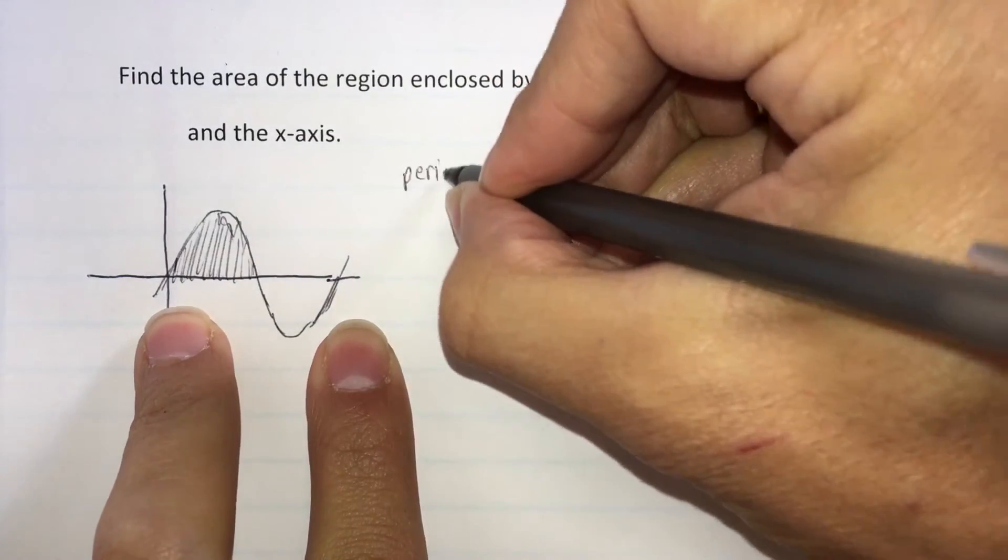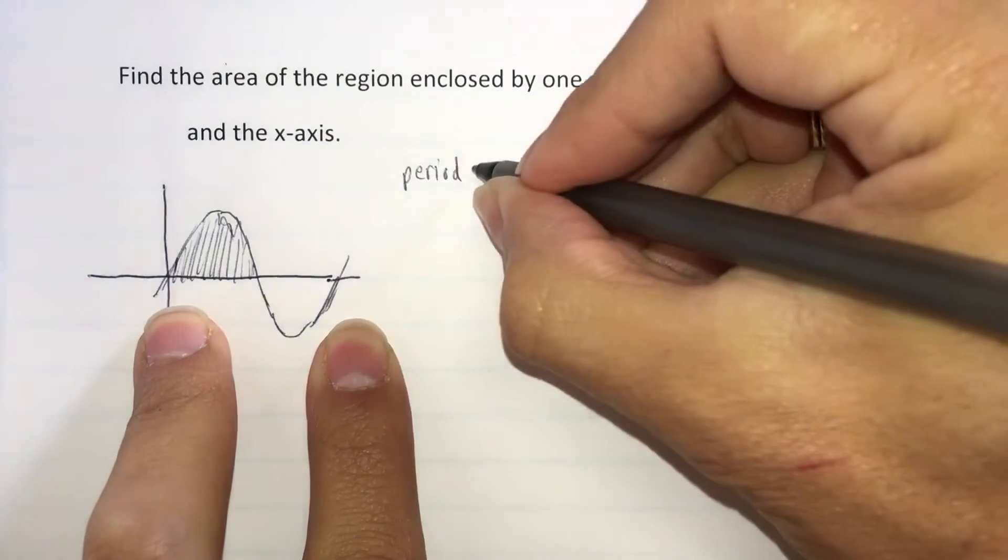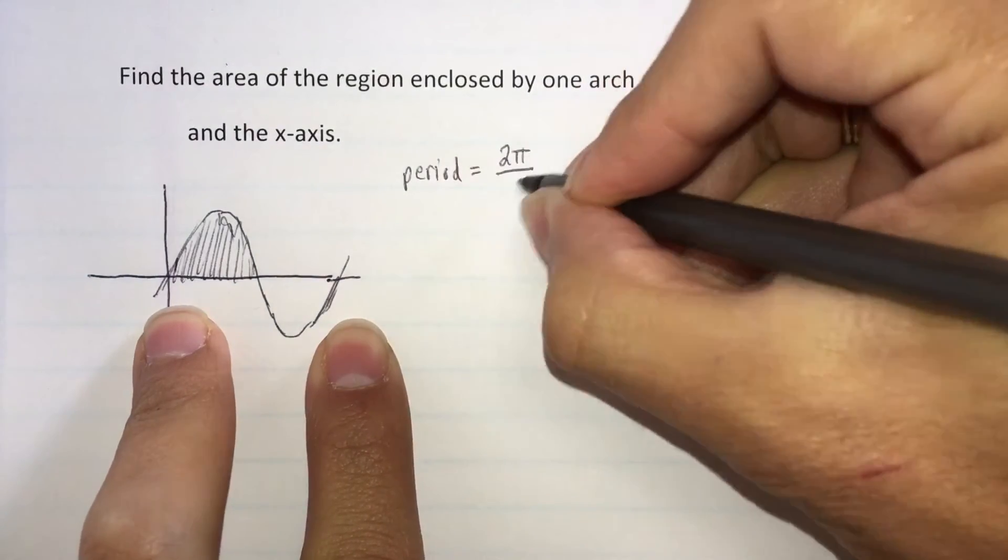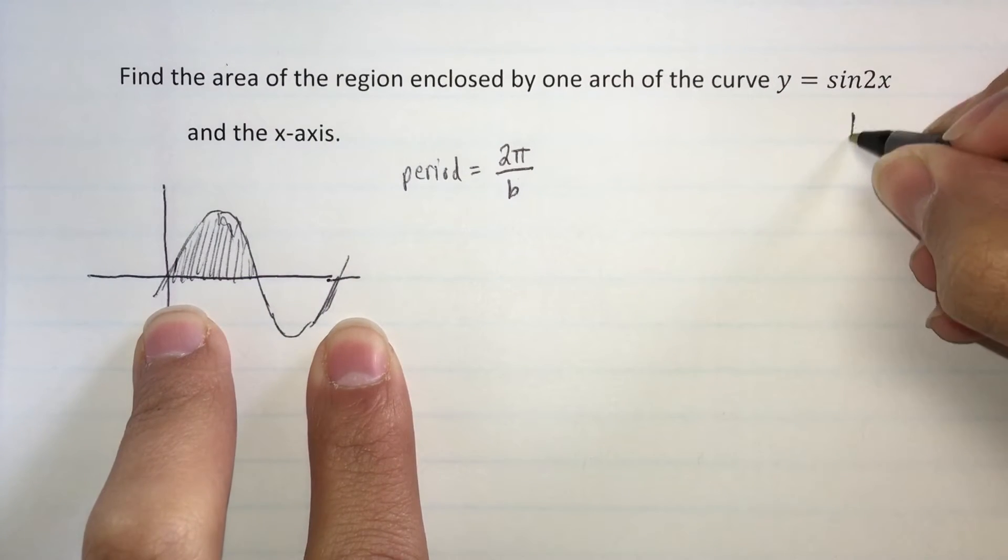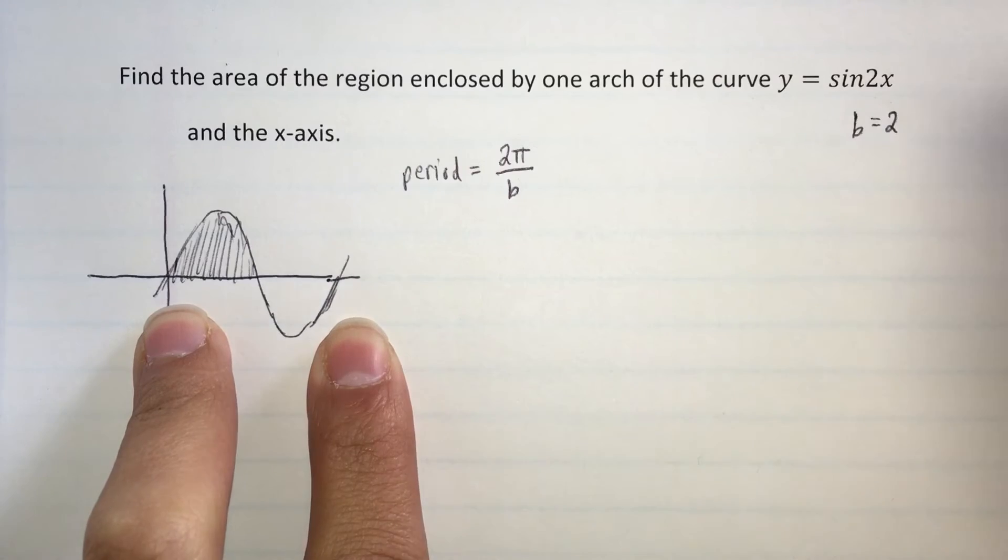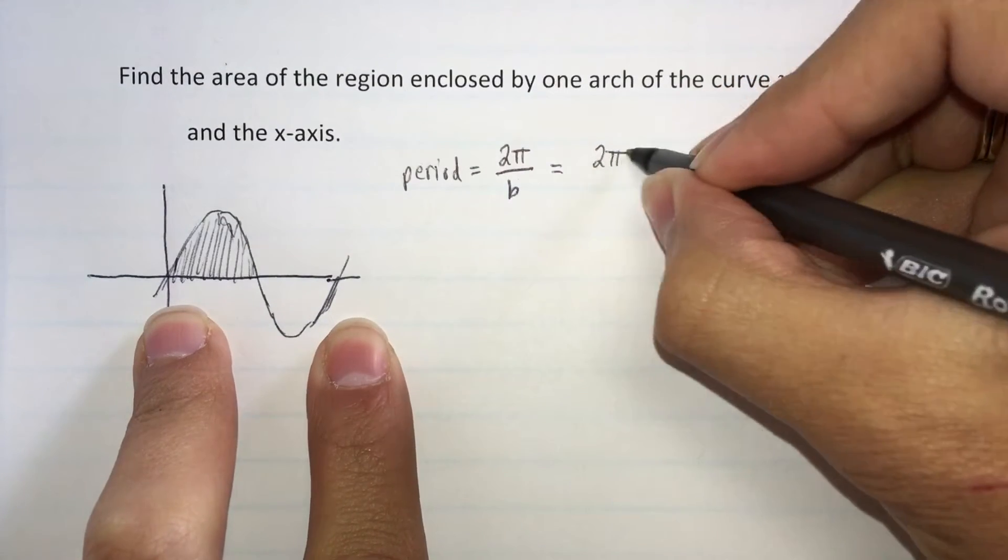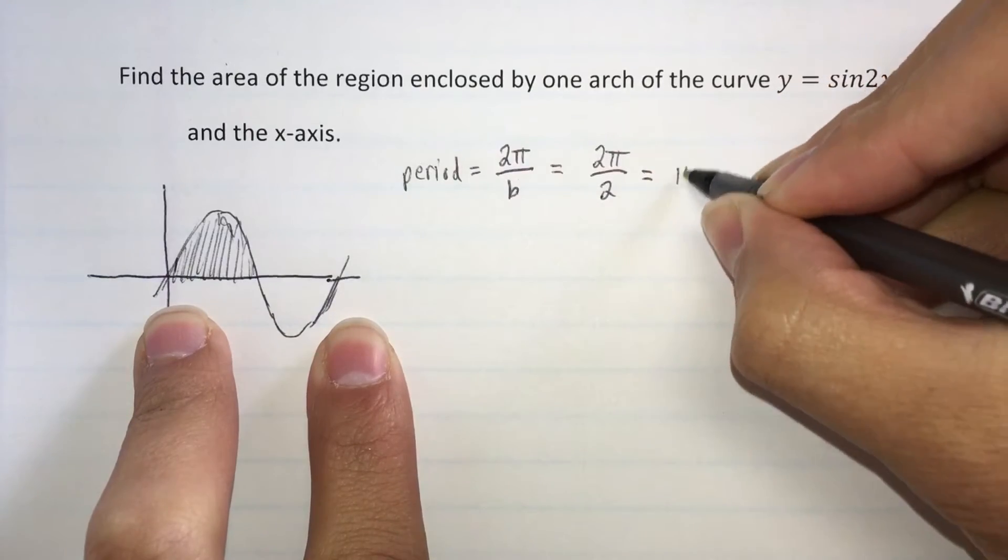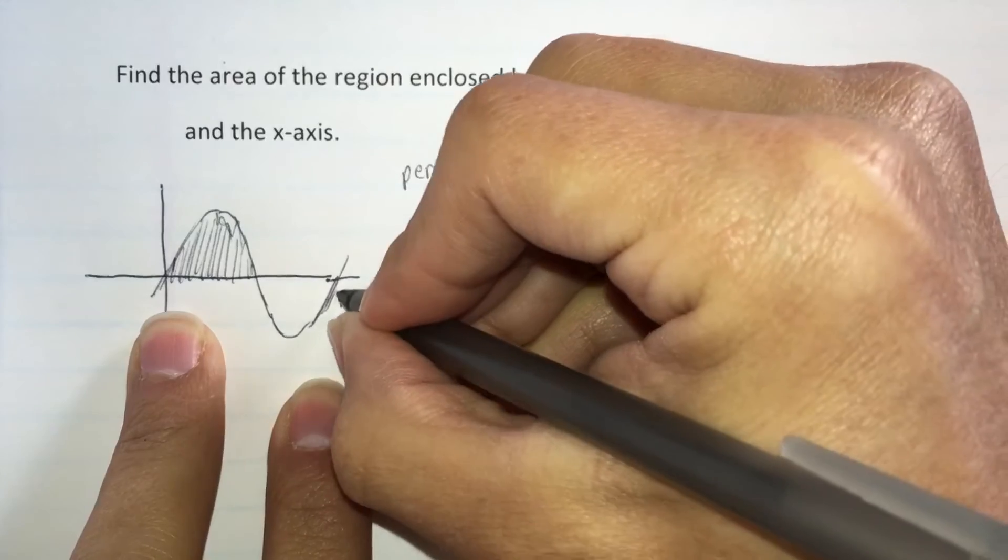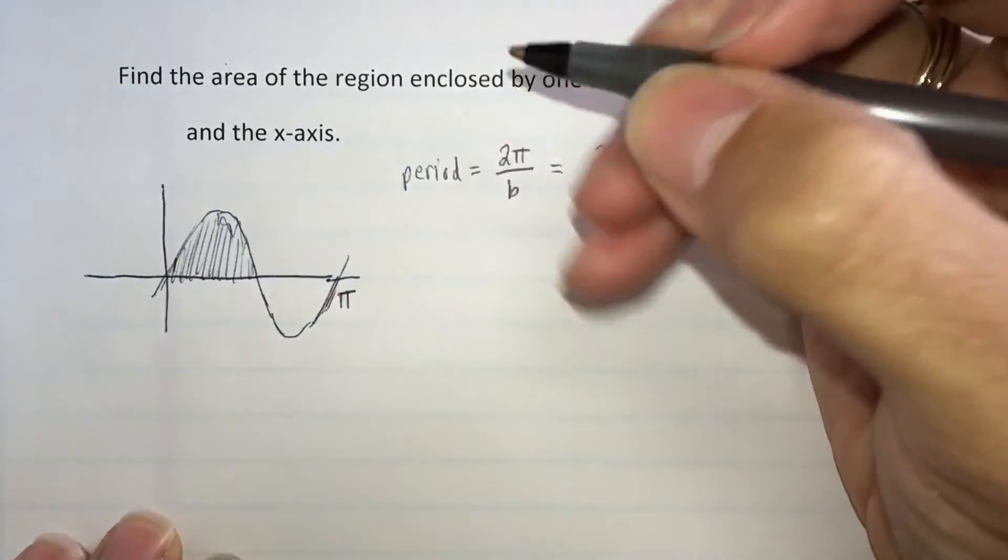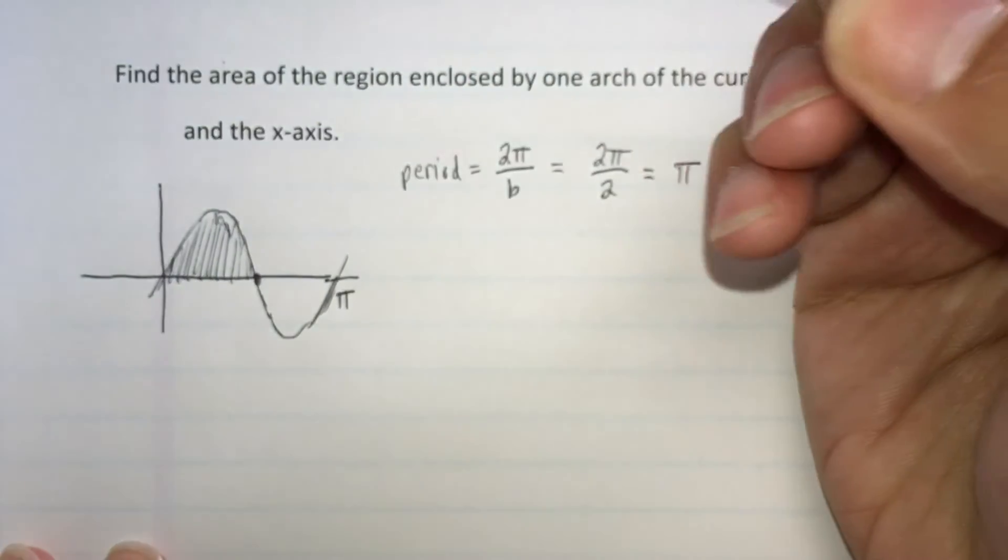The period of a sine function is going to equal 2π over B, and in our case B is equal to 2. B is the coefficient of x. So in our problem, the period is 2π over 2, which is π. So the period, the time needed to complete one cycle, would be π.